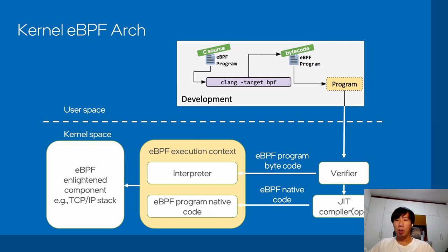You write a program in C, run Clang, and get the generic BPF bytecode. Your controller program will open that bytecode file and load it into the Linux kernel using the system call. The verifier will verify it, the JIT compiler will compile it into native CPU instructions, and then it is attached to the system call or hook that you defined. We show this picture just to compare with our QEMU eBPF architecture.